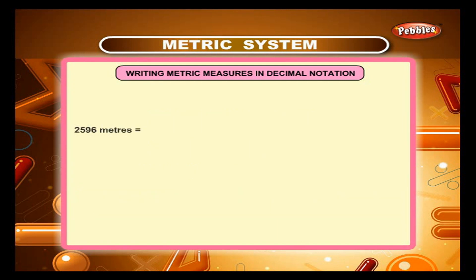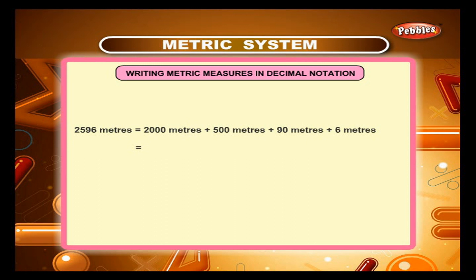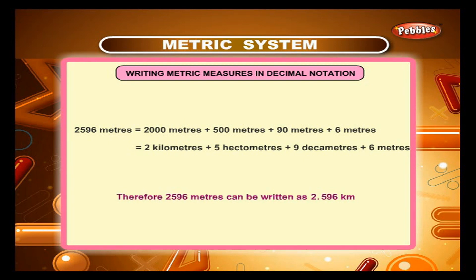2596 metres equals 2000 m + 500 m + 90 m + 6 m, which equals 2 km + 5 hectometres + 9 decametres + 6 metres. Therefore, 2596 metres can be written as 2.596 km. The decimal point separates the kilometres from the smaller units. When a unit value is zero, we place 0 in its position.